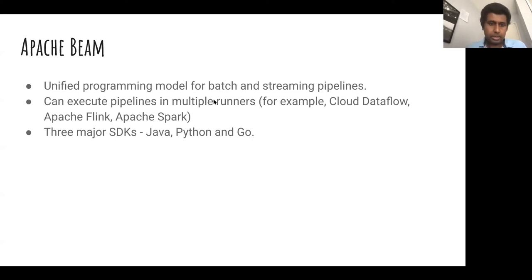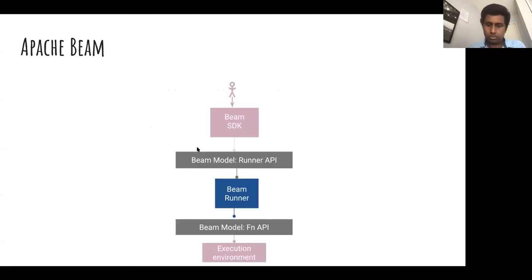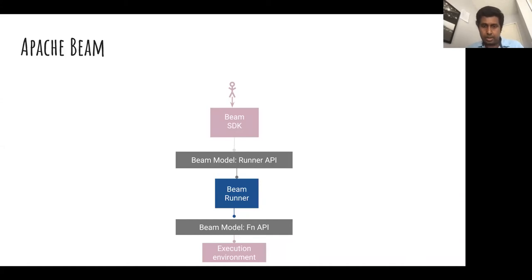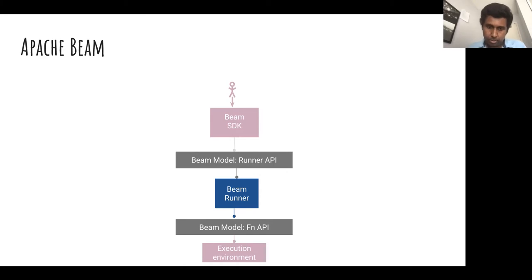We have three major SDKs: Java, Python, and Go. An Apache Beam pipeline looks like this: a user would use the Beam SDK to define a pipeline, and that pipeline would be converted to a standard definition through what we call the Beam Runner API, which produces a portable definition of a pipeline that is independent of the SDK. And then this pipeline would be submitted to a Beam Runner, like Dataflow or Flink. The runner would use another API called the Beam Fn API to connect to an execution environment to actually execute the parts of the pipeline.